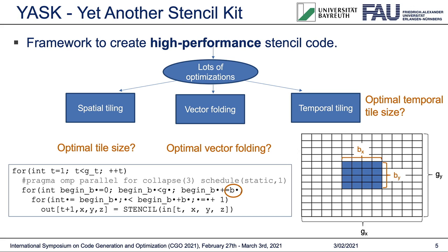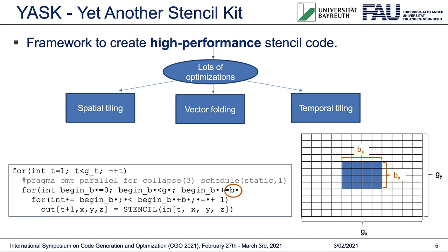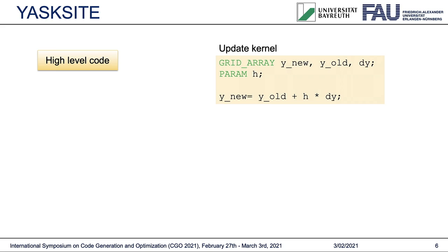In order to reduce the search space, this runtime testing is accompanied by optimization algorithms like hill climbing or gradient descent as used in YASK. However, if we have numerous kernels to test as in the iterative Runge-Kutta method, the runtime testing will become very expensive. This is one of the primary motivations to use an analytical tuning approach where this cost is practically negligible. For this paper, we will stick to the spatial and vector folding optimization to demonstrate this approach. In order to incorporate this analytical tuning idea into YASK, we developed YASKSite.